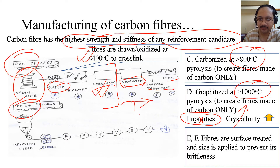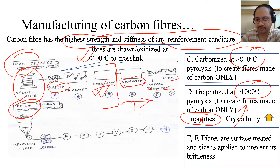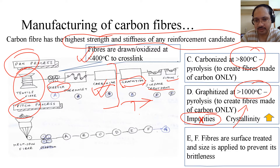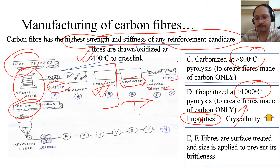The last step is surface treatment or sizing. The graphitization and carbonization processes create a very brittle carbon fiber, and since it must be handled, laid, transported, and infused with resin, some kind of surface treatment and sizing is required so that the brittleness can be reduced.